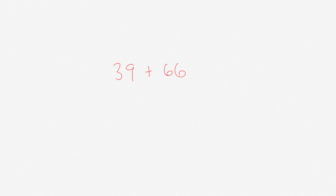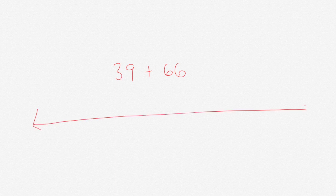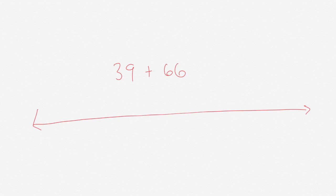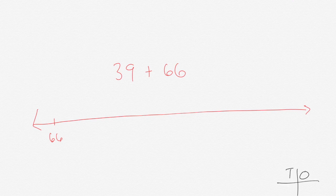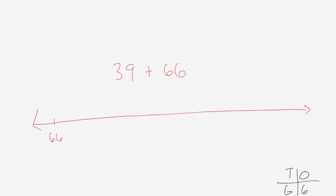All right, hope you had a chance to work this problem out. So I'll go ahead and draw my open number line. I'm going to start with my greater addend which is 66. I have my ones and tens separated. So I have six ones and six tens. Oh pardon me, I have nine ones and three tens.